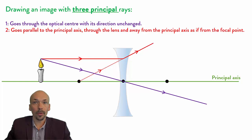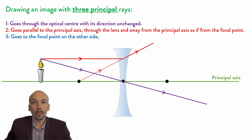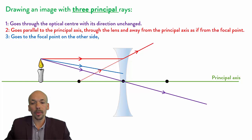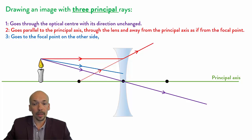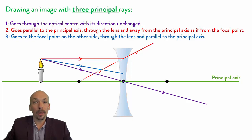The third principal ray will go to the focus point on the other side of the lens. So it tries to go to that focus point on the other side of the lens. But when it hits the lens, it will not go straight through, but it will go parallel to the principal axis and it looks like this.